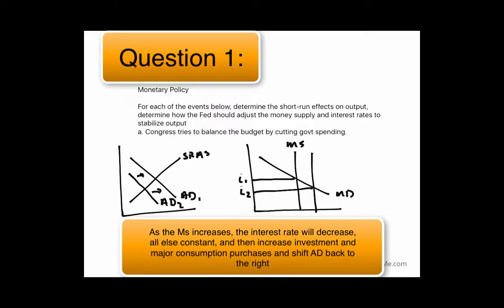that will increase investment and thus shift aggregate demand back to the right. So again, if they tried to cut government spending, you could compensate for that by increasing the money supply, which would decrease the interest rate and thus increase investment.